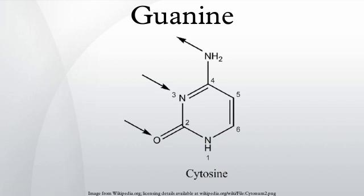Its high melting point of 350 degrees Celsius reflects the intermolecular hydrogen bonding between the oxo- and amino groups in the molecules in the crystal. Because of this intermolecular bonding, guanine is relatively insoluble in water, but it is soluble in dilute acids and bases.